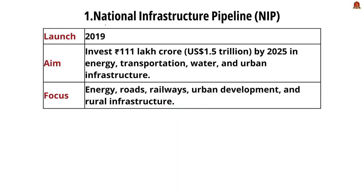Now let us see the government initiatives for infrastructure development. The first is the National Infrastructure Pipeline, launched in 2019. It aims to provide a forward-looking roadmap for infrastructure projects covering energy, transportation, water, and urban infrastructure. The government plans to invest around ₹111 lakh crore by 2025, with key focus areas being energy, roads, railways, urban development, and rural infrastructure.